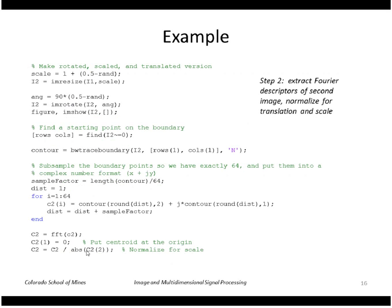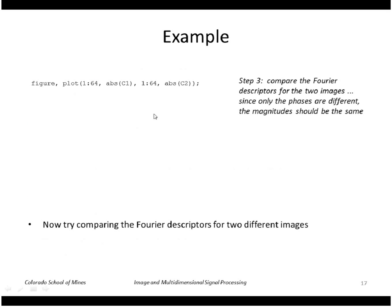Next, we'll take that same image and randomly scale and rotate it. And then we'll do the same thing. We'll extract the boundary of that second image, normalize it for scale and translation. And then we'll compare the magnitudes of those two Fourier descriptors.